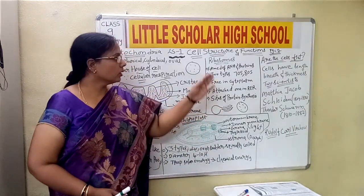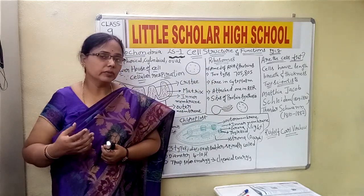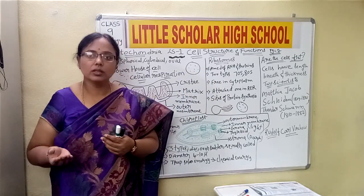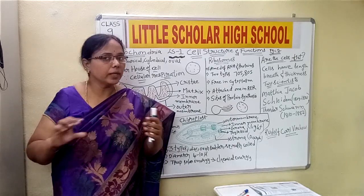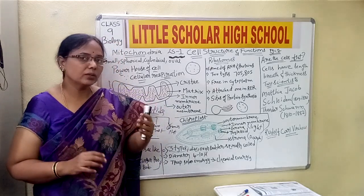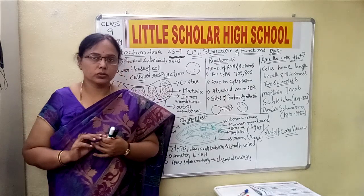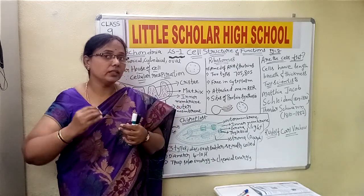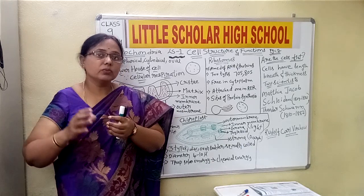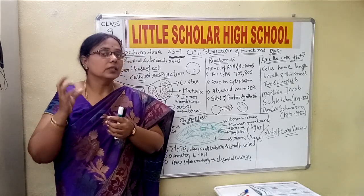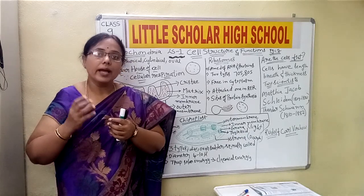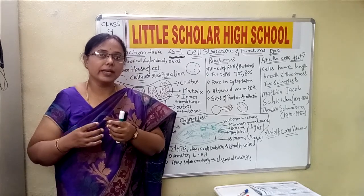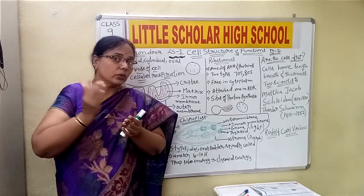When we observe the cell under the microscope, the cells appear flat and all the cell organelles appear arranged in one plane. To see the correct thickness of the cell, we need to change the focus of the microscope and reduce the intensity of the light. When we reduce the light intensity and look at the cell wall, we can correlate the thickness of the cell.